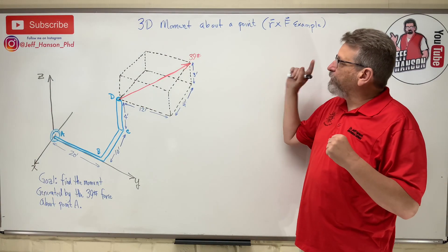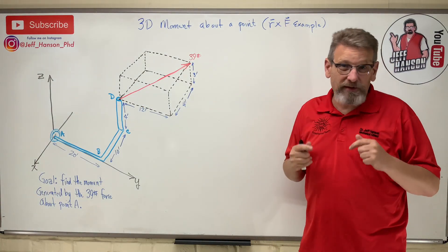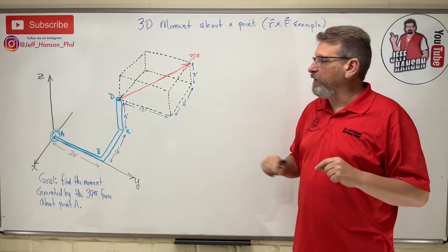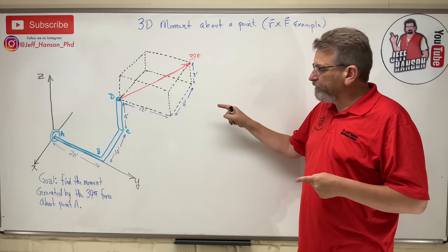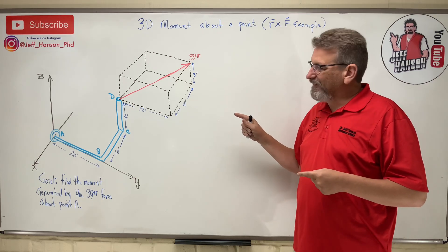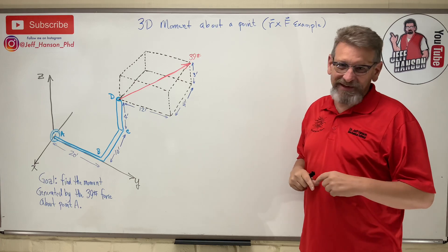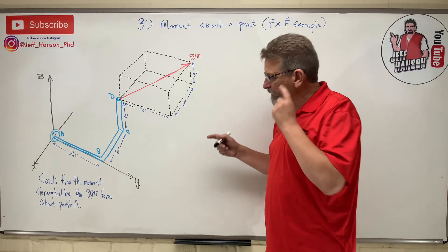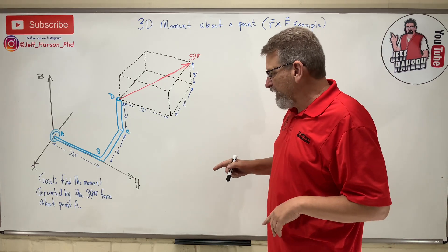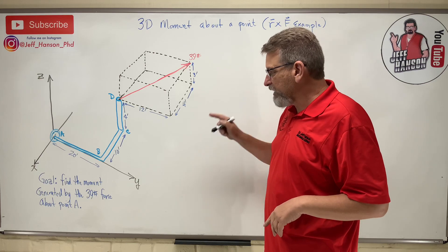Hey gang, we're back. We're talking about 3D moments about a point. We're going to use our r cross F formula. Look at this problem. Are you scared? Don't be scared, I got you. Here we go.